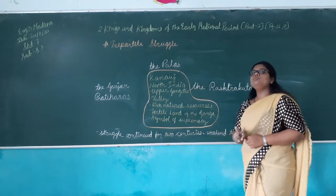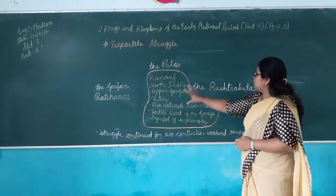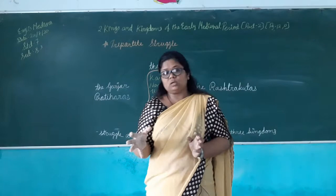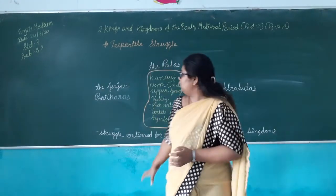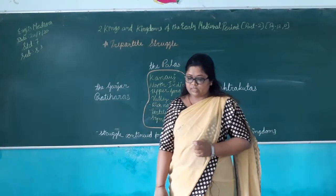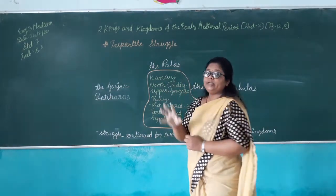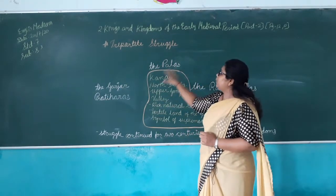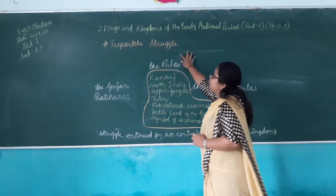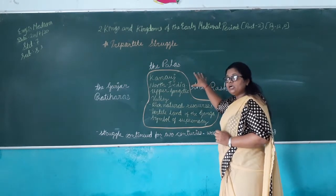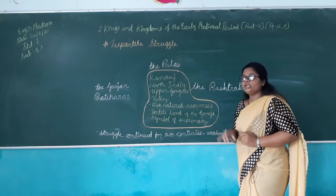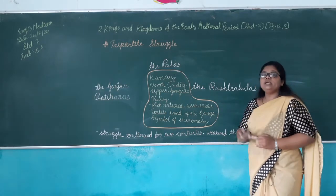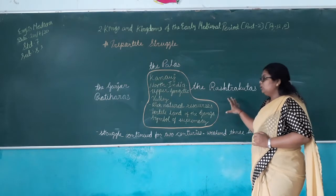This struggle continued for two centuries, and because of that these three dynasties weakened and eventually lost control over Kannauj and their own kingdoms. The Tripartite Struggle is named so because it involved three parties fighting over control of Kannauj, which was rich in natural resources, had fertile Gangetic land, and was the symbol of supremacy.